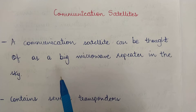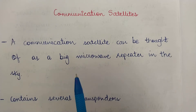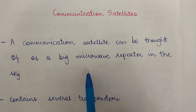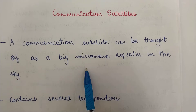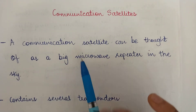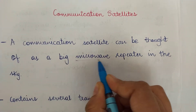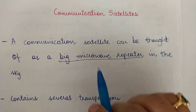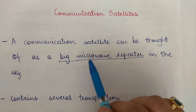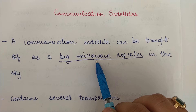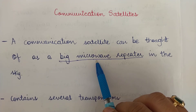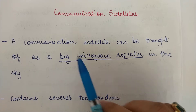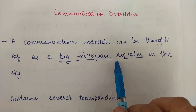Since we are studying unguided transmission media, whatever communication is happening is happening through the sky. So you can think of a communication satellite as a big microwave repeater — a repeater which is basically repeating or amplifying the microwave signals in the sky.